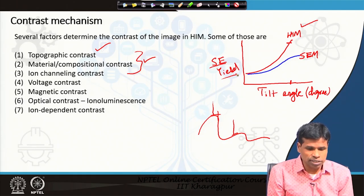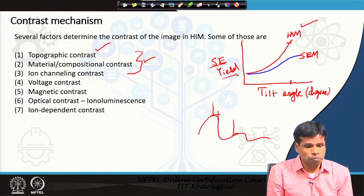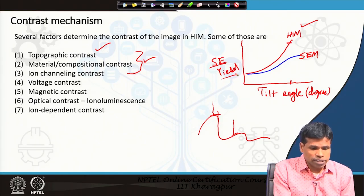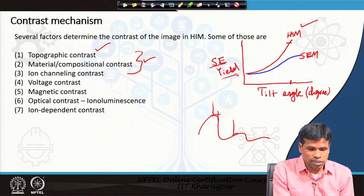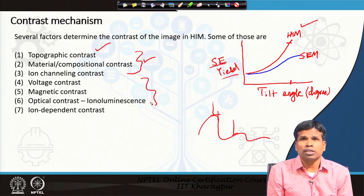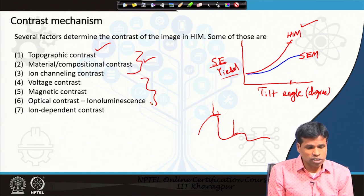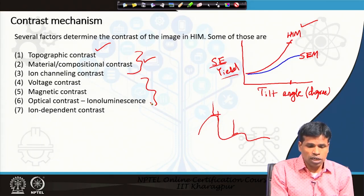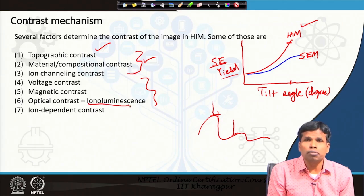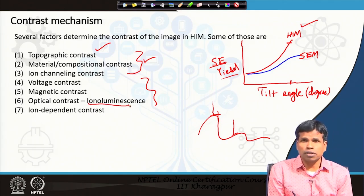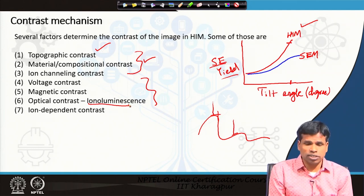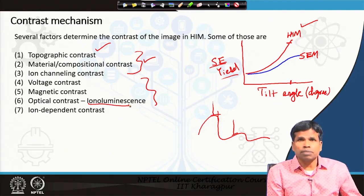Ion channeling contrast is similar to that of the scanning electron microscope — depending on whether the material is amorphous or crystalline, channeling contrast occurs based on orientation. Voltage contrast, magnetic contrast, and optical contrast are all similar to those in the SEM. In the SEM we call it cathodoluminescence because electron bombardment occurs, but here in the helium ion microscope we call it ionoluminescence because helium ions are incident on the specimen surface.